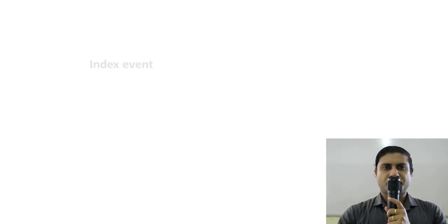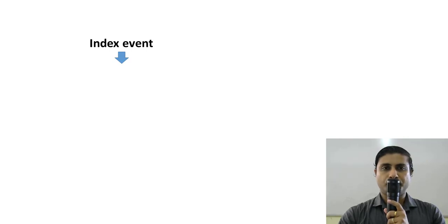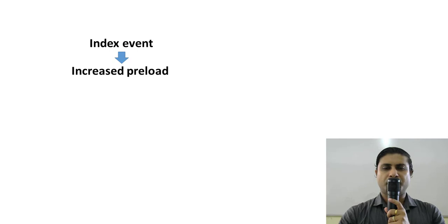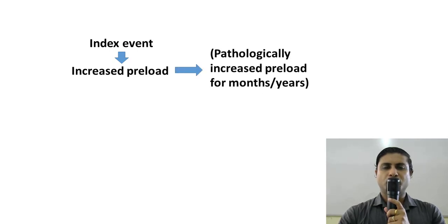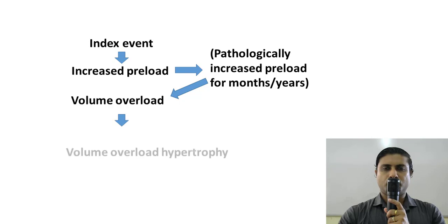In the previous video, we discussed how an index event caused an increase in sympathetic nervous system activity and RAS activity, leading to an increase in inotropy, chronotropy, preload, and afterload. We discussed the effects of increased preload and how, when preload is increased in a pathological manner for a prolonged period of time, it results in hemodynamic overload — which we called volume overload. The volume overload led to volume overload hypertrophy.